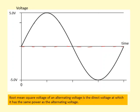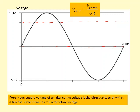So what we use instead is the root mean square voltage. The root mean square voltage of an alternating voltage is the direct voltage at which it has the same power as the alternating voltage. So we're trying to find a direct voltage — it turns out it's roughly here — which gives the same power. It's calculated using this equation. You can work out the root mean square current as well, using this equation.